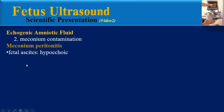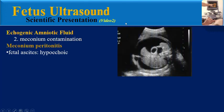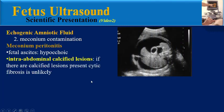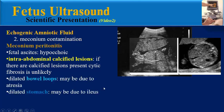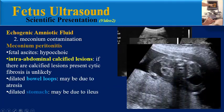One of the findings of meconium peritonitis is fetal ascites, which is hypoechoic fluid, along with intra-abdominal calcified lesions. An important point: if calcified lesions are present, cystic fibrosis is unlikely. Dilated bowel loops may be due to small bowel atresia, and dilated stomach may be due to ileus.